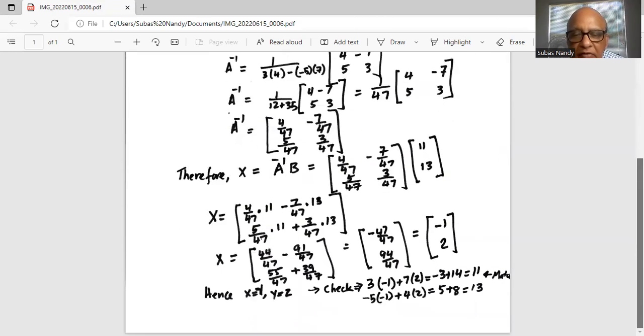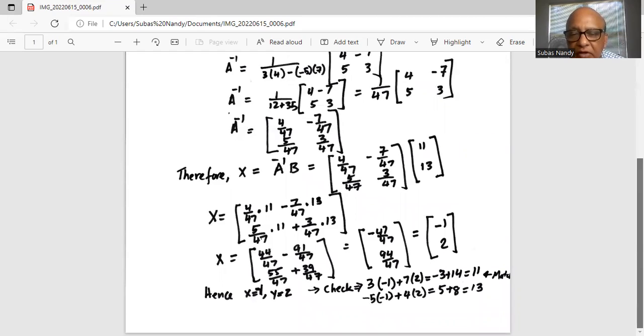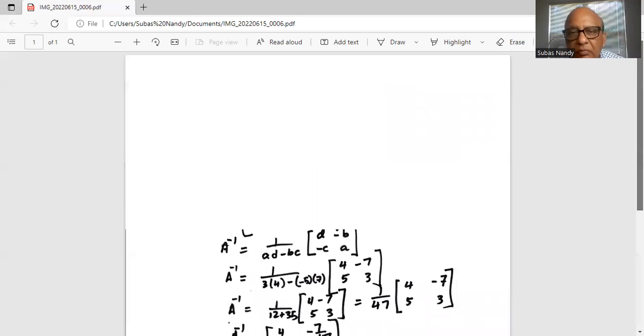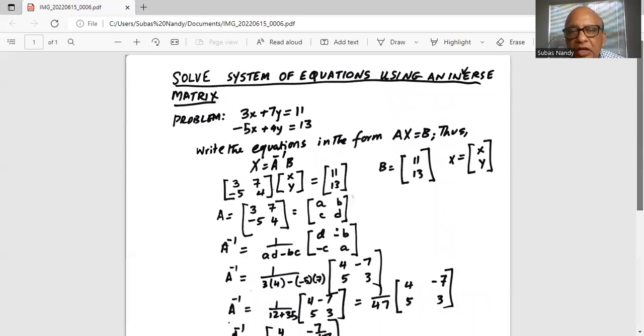When we plug it into the first equation, it's 3 times minus 1 plus 7 times 2, which is minus 3 plus 14 equals 11. In the second equation, minus 5 times minus 1 is positive 5 plus 4 times 2 is 8, which equals 13. These match the original equation.